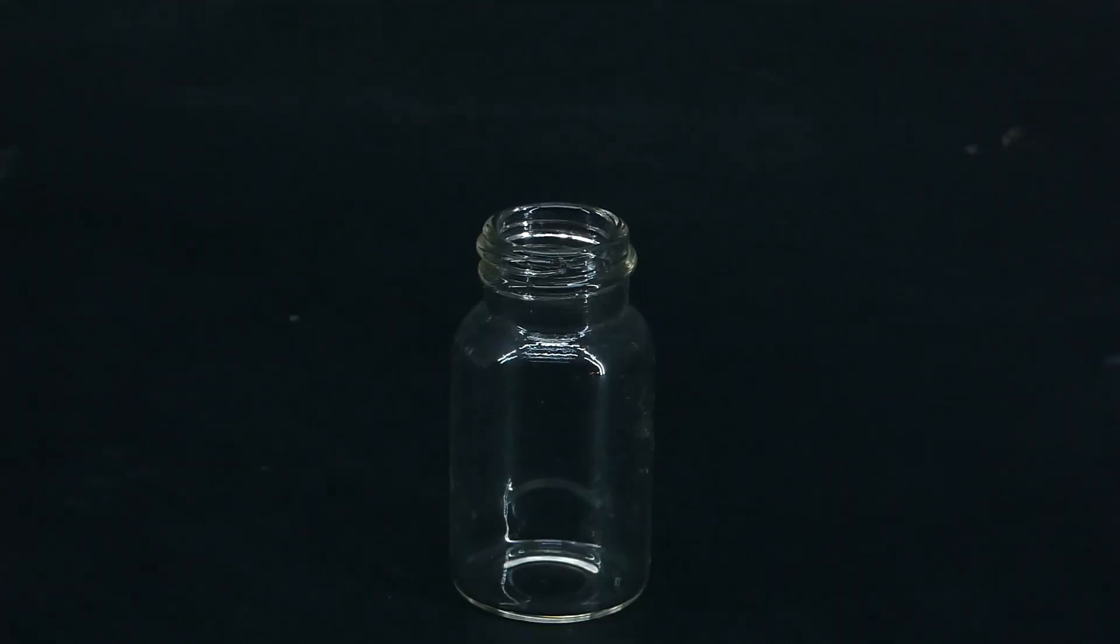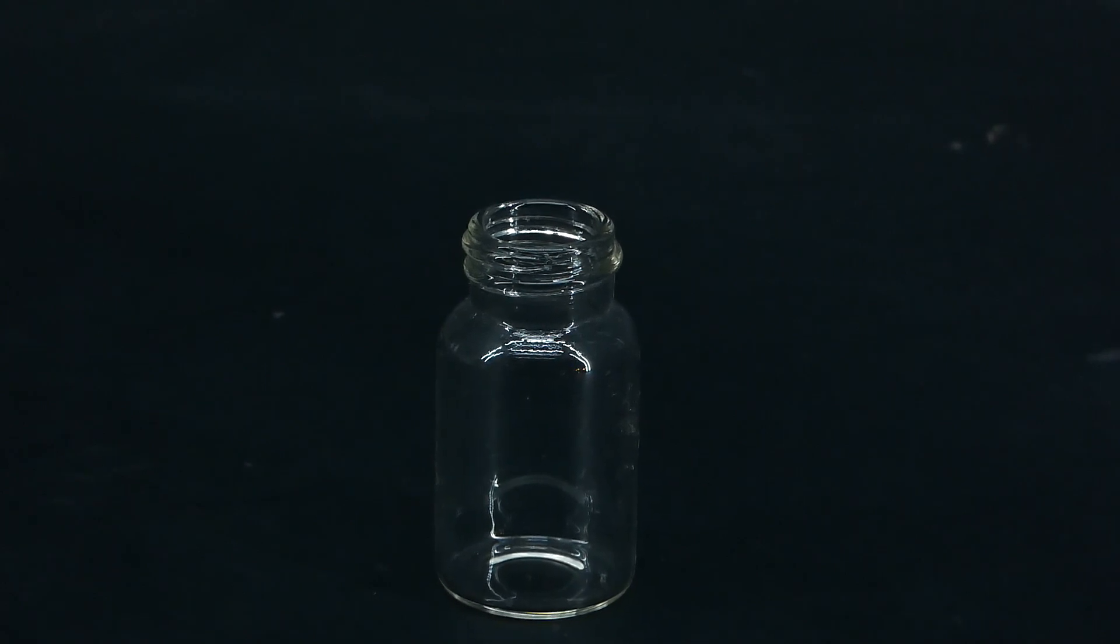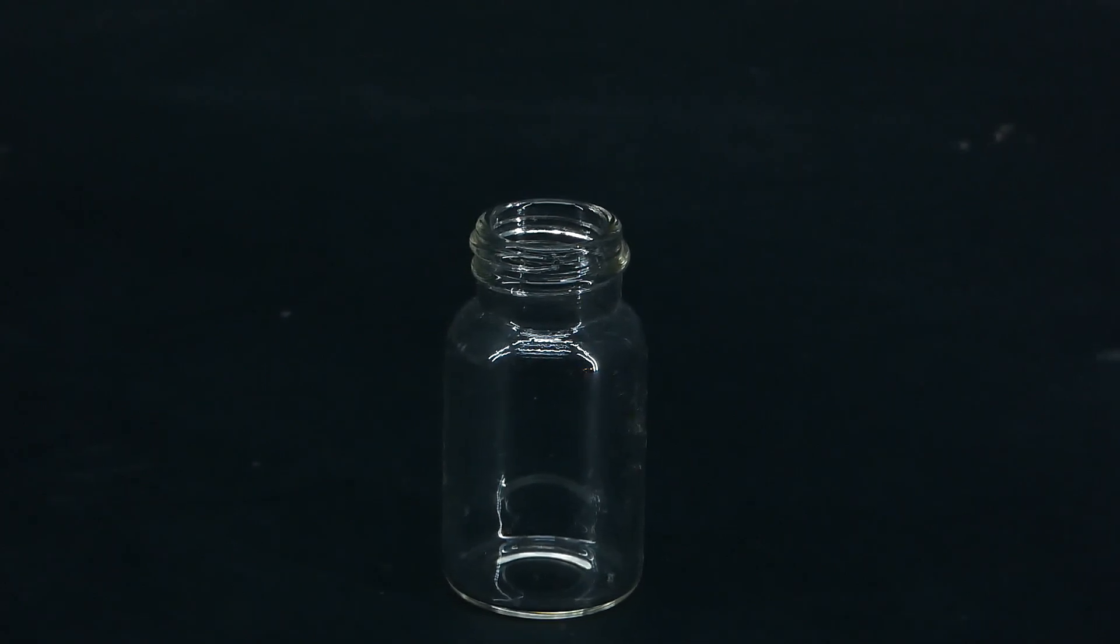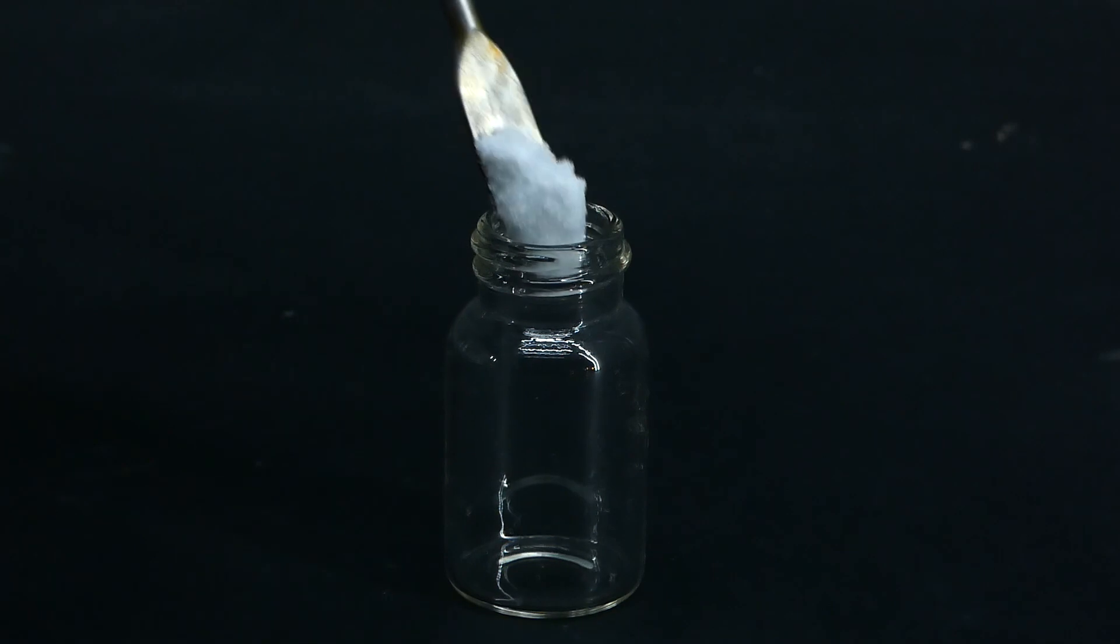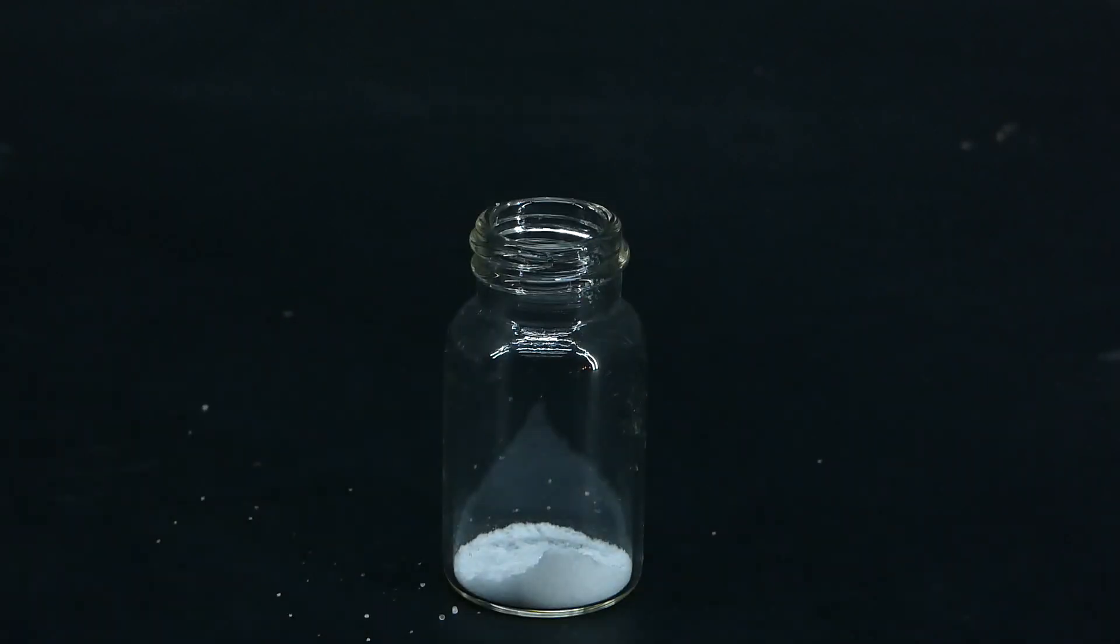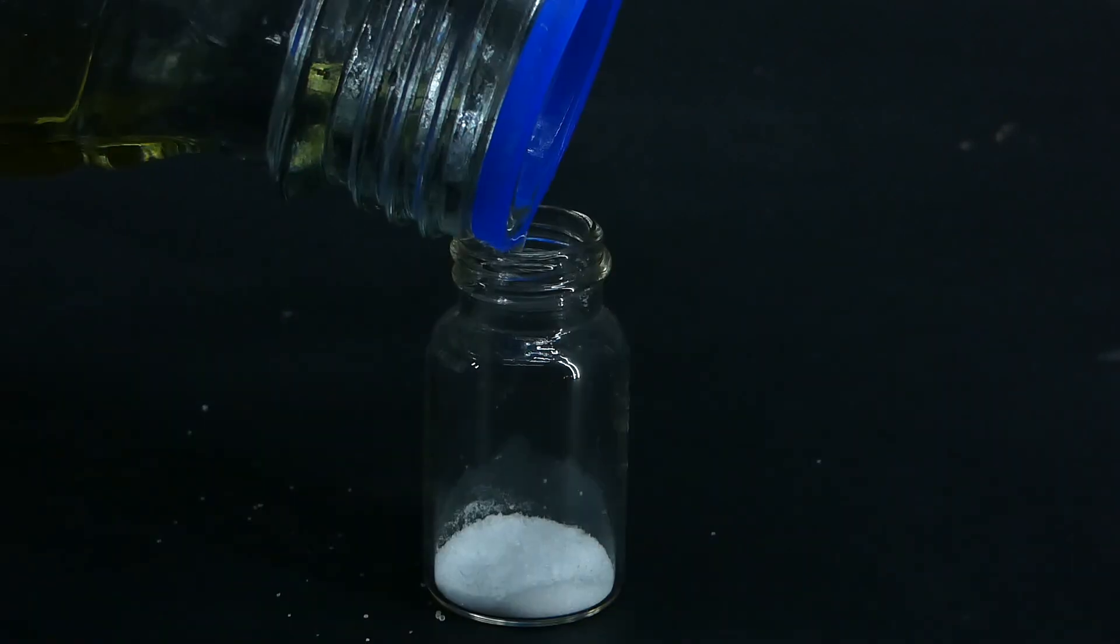After playing with the isopropyl nitrite, I wanted to store it for a long time, and to do that, I prepared a vial with some sodium bicarbonate and sodium chloride, to trap the remaining acids and water, to prevent the ester hydrolysis.